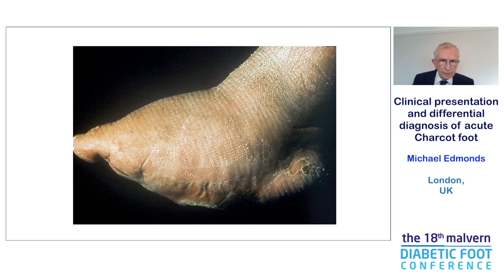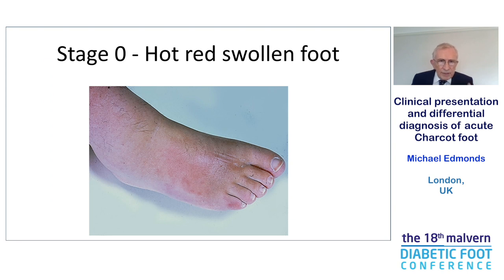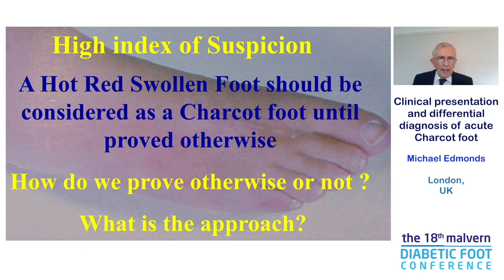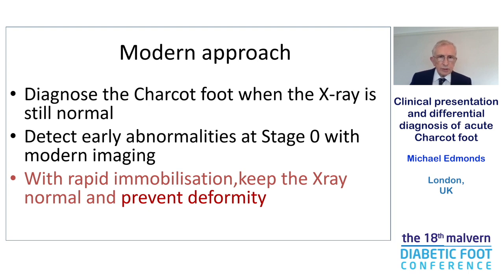These deformities are obvious, and when patients present with this, the diagnosis is clear and one proceeds to management. But I want to take you back to the initial stage, where diagnosis is extremely important to prevent progression to the need for amputation. This is the hot red swollen foot, stage naught, which has been added to the Eichenholz classification. One must have a high index of suspicion — a hot red swollen foot should be considered a Charcot foot until proved otherwise. The modern approach is to diagnose a Charcot foot when the x-ray is still normal, detect early abnormalities with modern imaging, and with rapid immobilization keep the x-ray normal and prevent deformity.